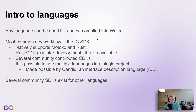In addition to the IC SDK, we also have the Rust CDK, or canister development kit, that is also available for use with the local tooling provided by DFINITY. There are several community contributed CDKs like the TypeScript and Python ones featured on the homepage of the developer documentation. Another key feature of developing on the Internet Computer is that it's possible to use many languages within a single project — you can write one canister in Motoko, another in Rust, and a third in Python. That is made possible through Candid, which is the Internet Computer's Interface Description Language, or IDL. We'll be talking about Candid in this module and diving deeper in a future level of the developer journey.